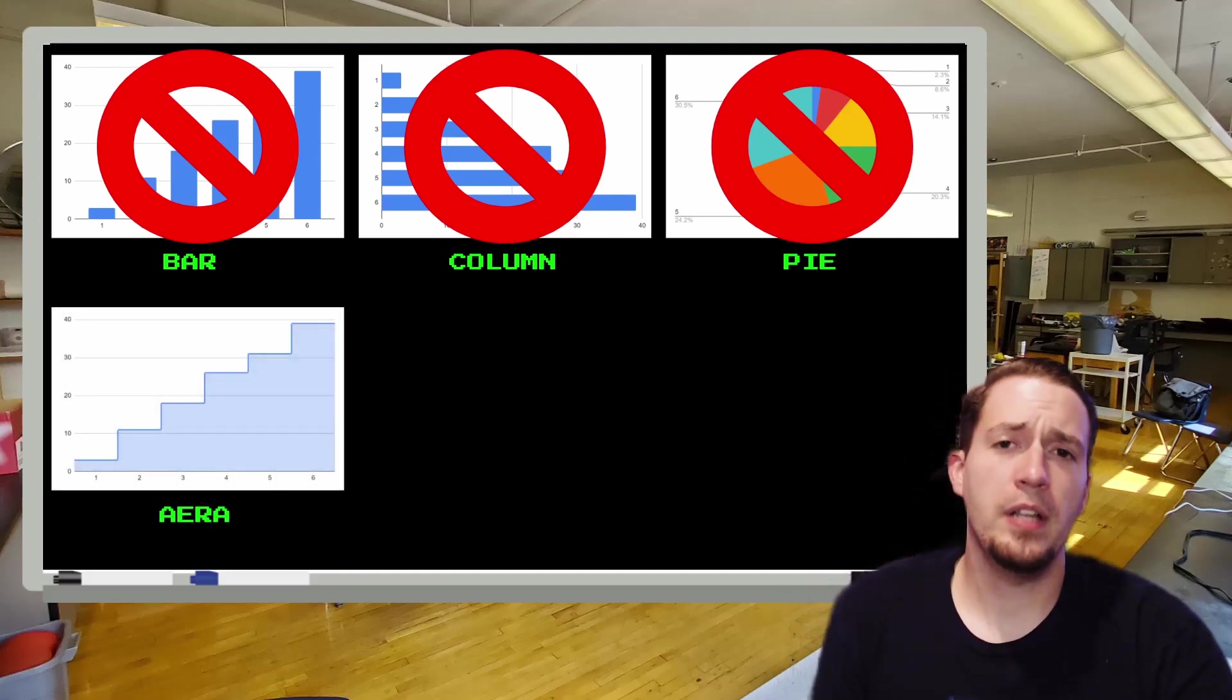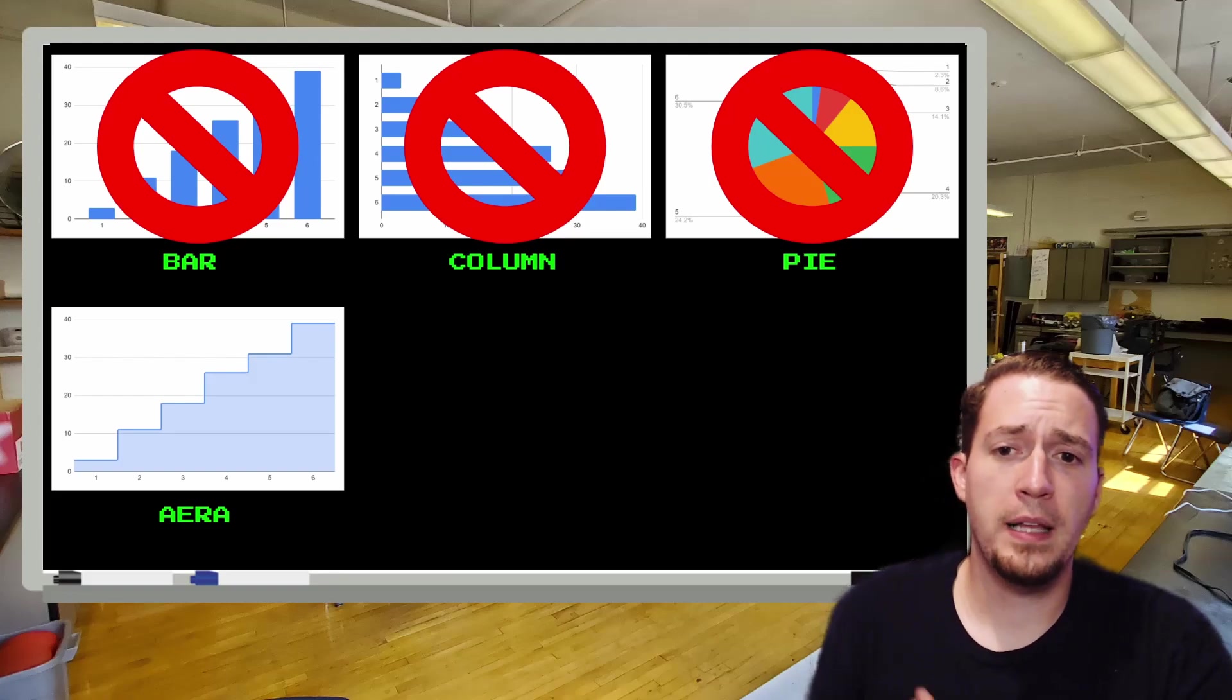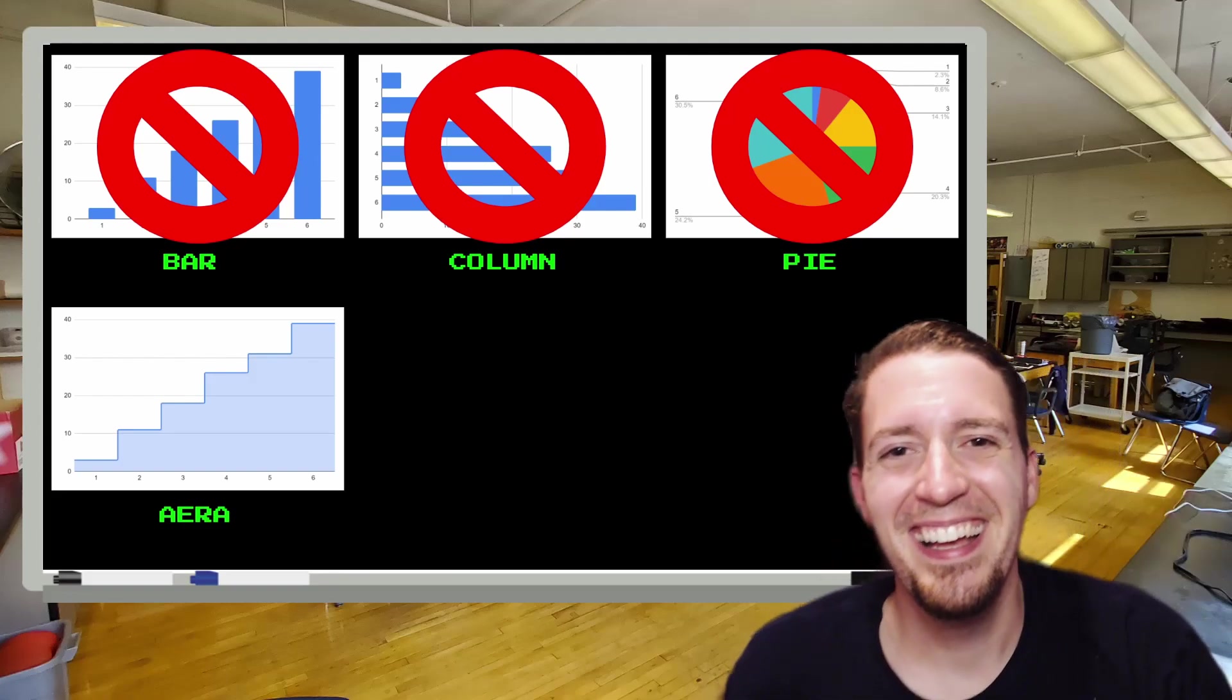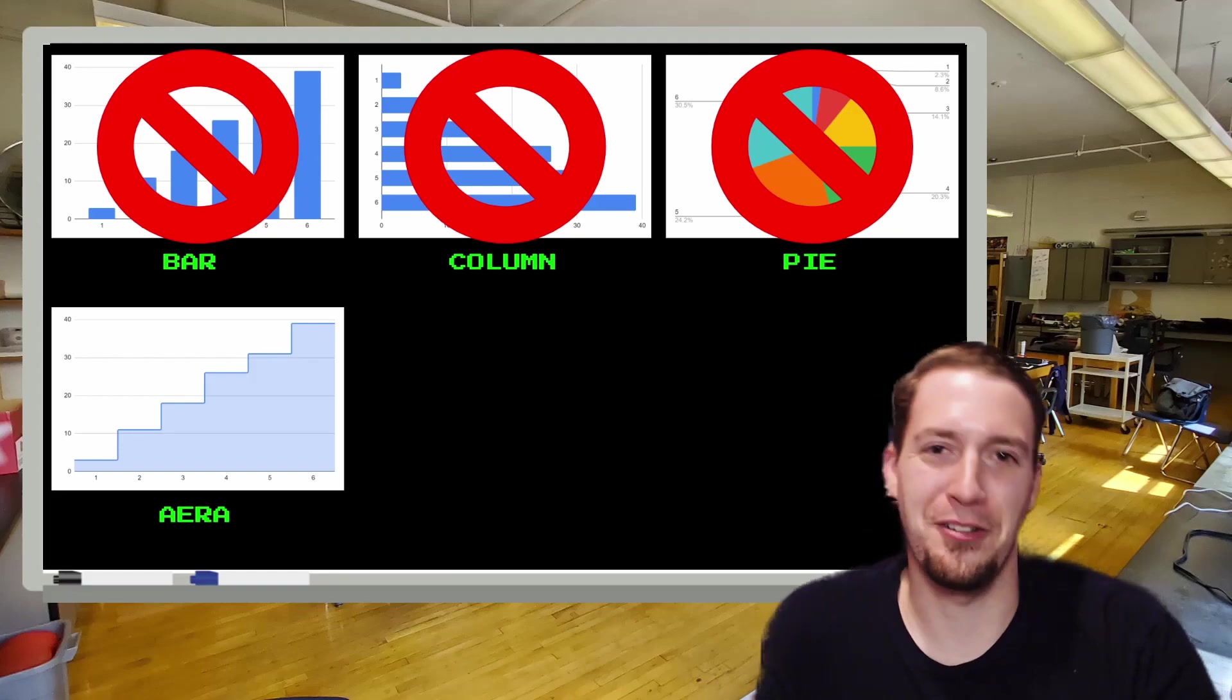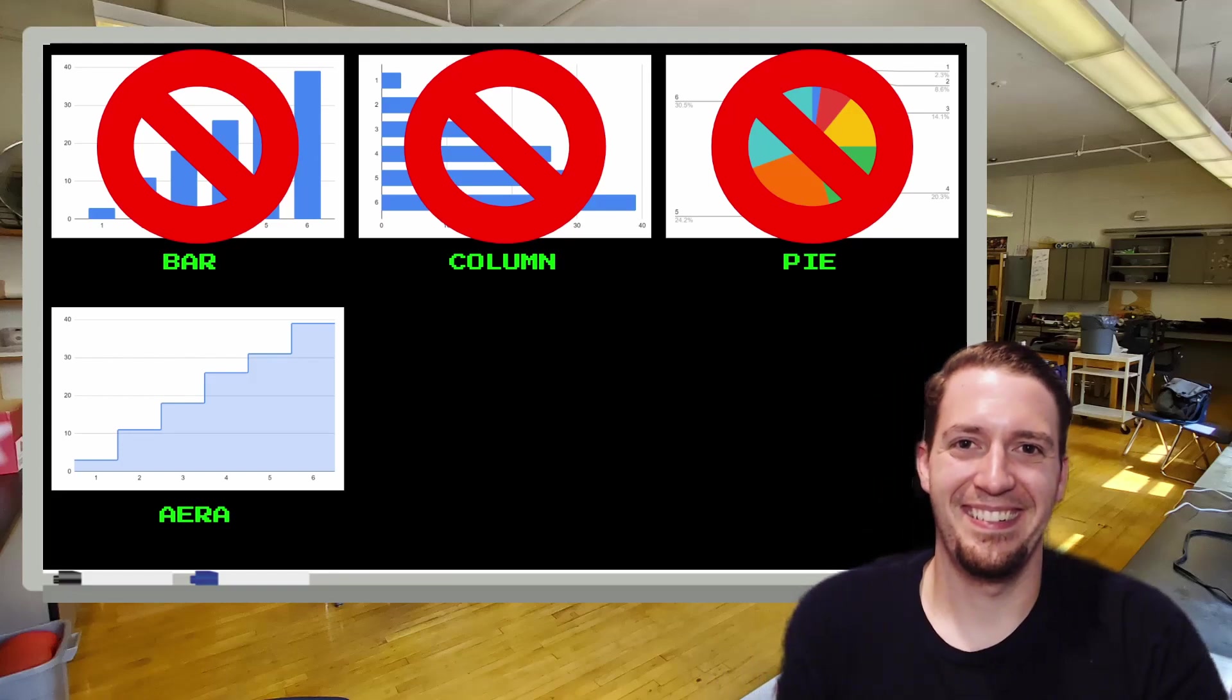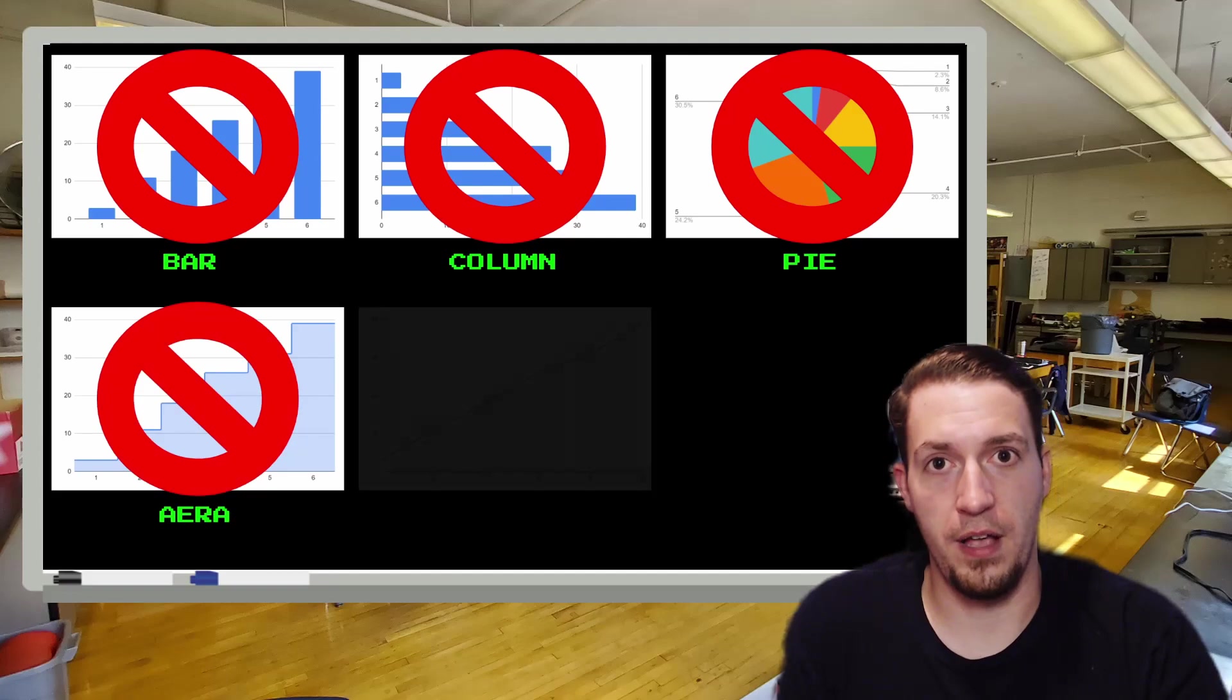This next graph is known as an area graph. And although this graph might look like you can just climb it towards success. Get it? Because it looks like stairs. Not a good graph for us.